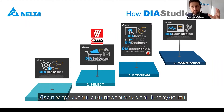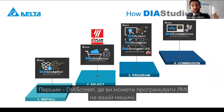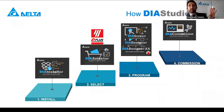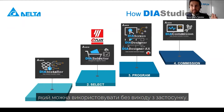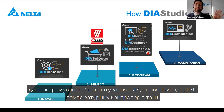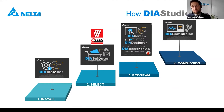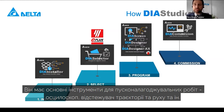For the programming part — the core — we offer three tools. First, the Screen, where you can program the human-machine interface using a powerful object-oriented software like Lua. Second, the Designer, the core of our suite, which can be used without leaving the application to program and configure PLCs, servo drives, inverters, temperature controllers, and more. There is also a network configuration tool that allows you to configure machine network settings easily between all elements. And for commissioning, the Commission tool delivers basic commissioning tools such as a solid oscilloscope, motion tracker, and PLC I/O status.